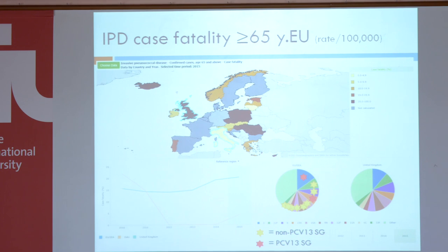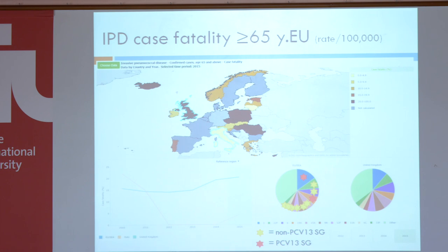We don't have an effective vaccine against serotype 3 at this moment. The other red star is 19A — 19A is in the 13-valent conjugate vaccine — and you see that it still remains an important cause of invasive pneumococcal disease.